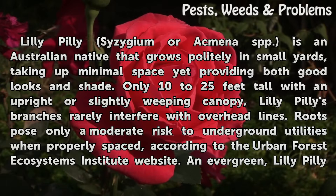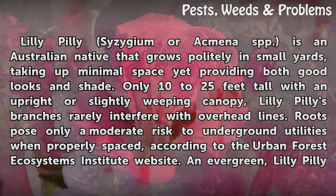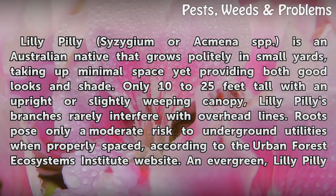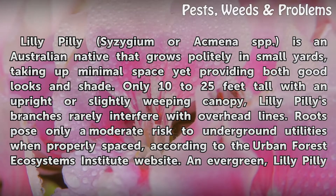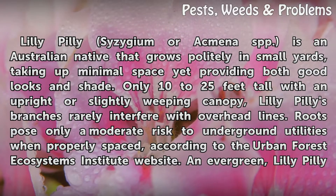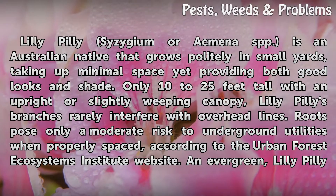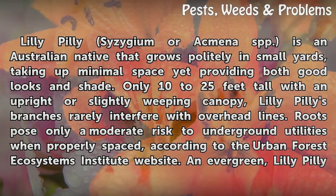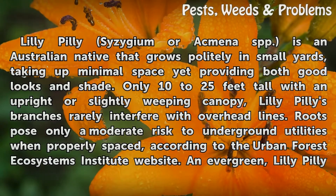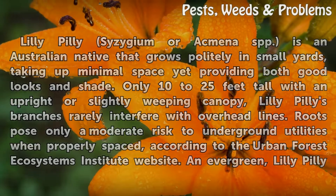Lillipilly, Sisygium or Acmena SPP, is an Australian native that grows politely in small yards, taking up minimal space yet providing both good looks and shade. Only 10 to 25 feet tall with an upright or slightly weaving canopy, Lillipilly's branches rarely interfere with overhead lines. Roots pose only a moderate risk to underground utilities when properly spaced, according to the Urban Forest Ecosystems Institute website.